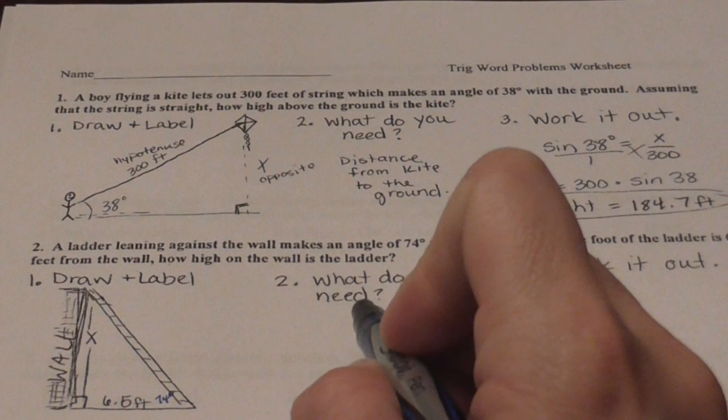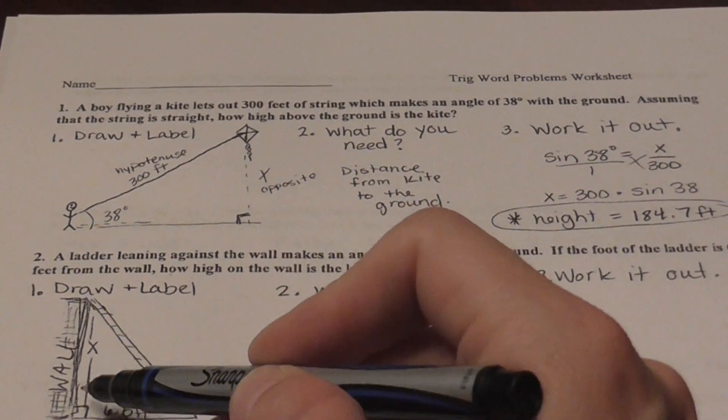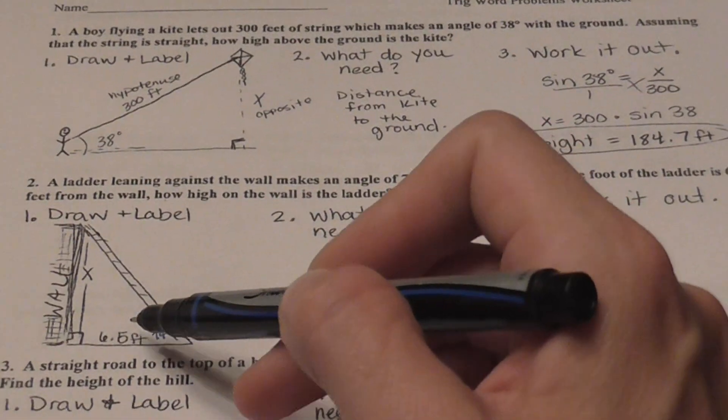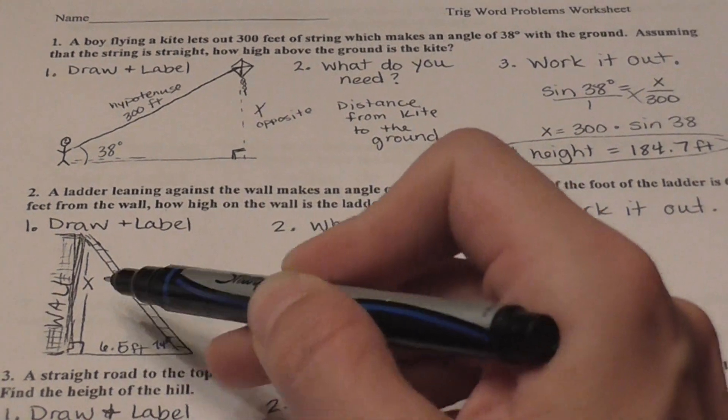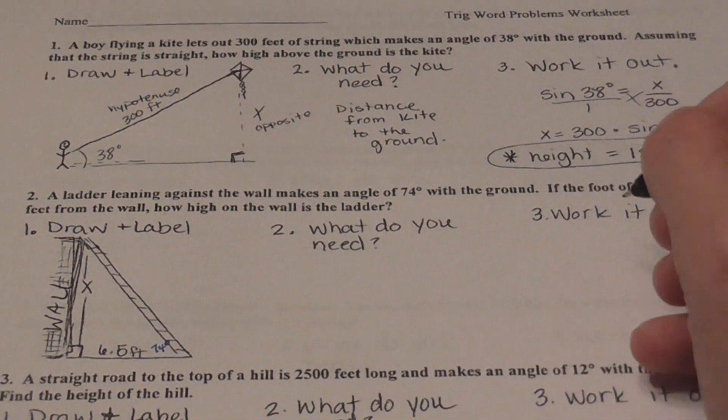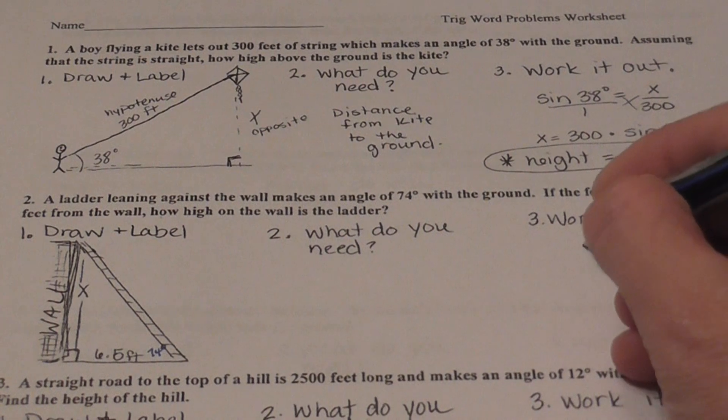All right. And then again, what do we need? I need the height. In terms of trig, what do I have and what do I want? I have my adjacent side. I want my opposite. So what uses opposite and adjacent? That would be tangent.